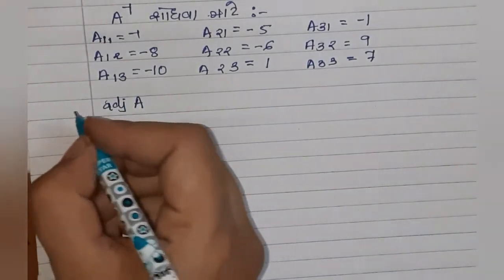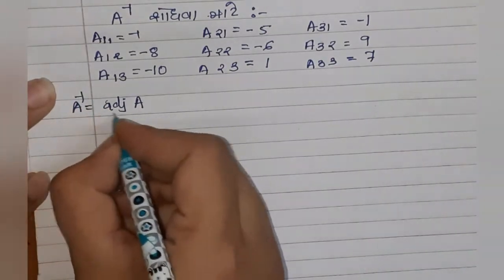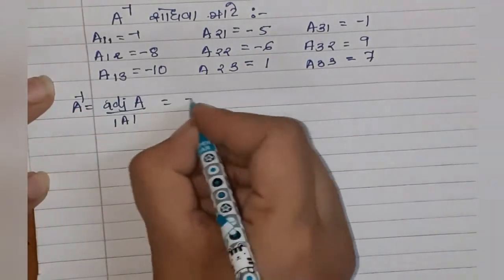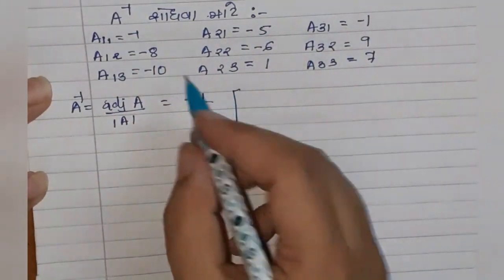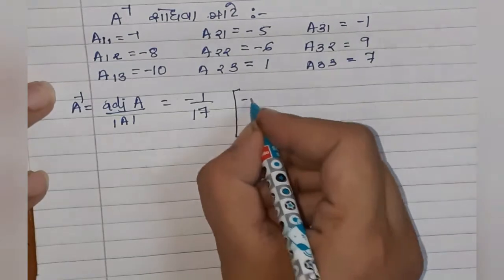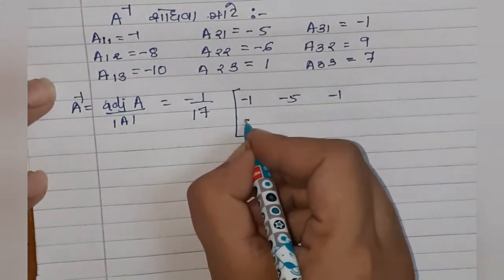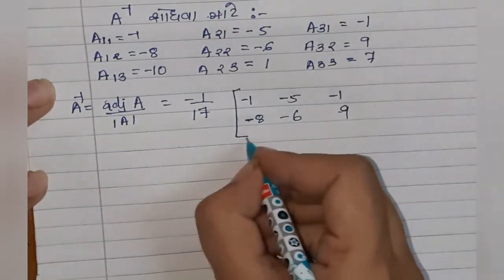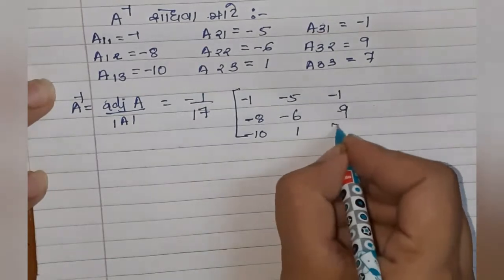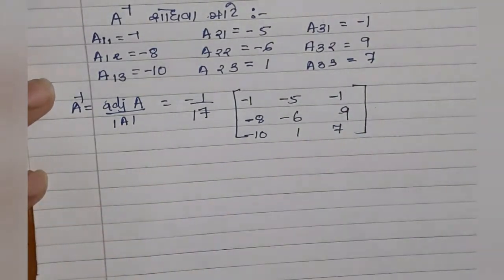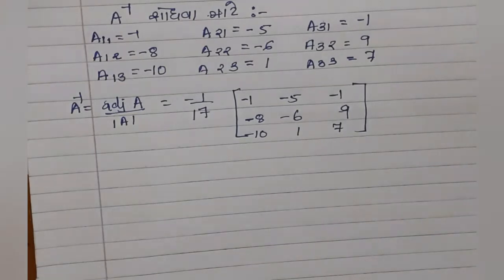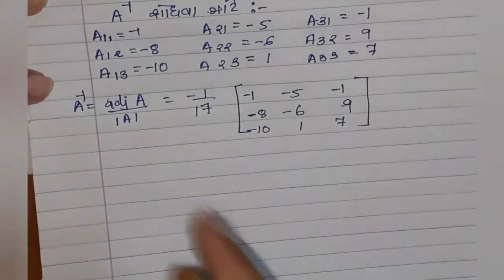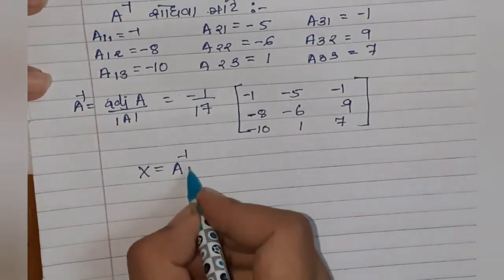A⁻¹ = (1 / det A) × adj A = (1 / -17) × adj A. adj A ની બધી સંખ્યાઓ શ્રેણીકમાં ગોઠવો. -17 ને અંદર ગુણવાનો ફાયદો નથી, એટલે એ શ્રેણીક ને એ જ રીતે રાખો. X = A⁻¹ B.